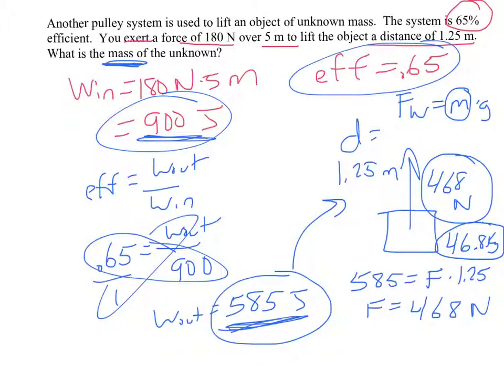Now, any time you do a problem where you're working backwards a lot, it never hurts to just take those numbers and plug it in and redo the problem from the beginning. So we say, okay, if this has a mass of 46.8 kilograms, what is its weight? What is the work out? Just double check and make sure you're getting these answers. And that will make sure you get it.